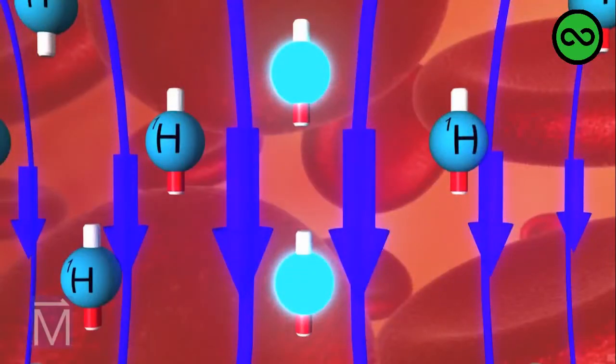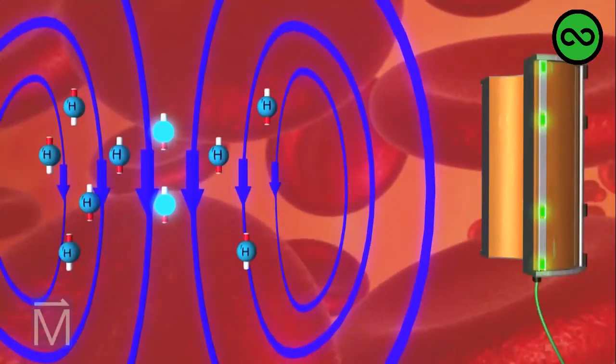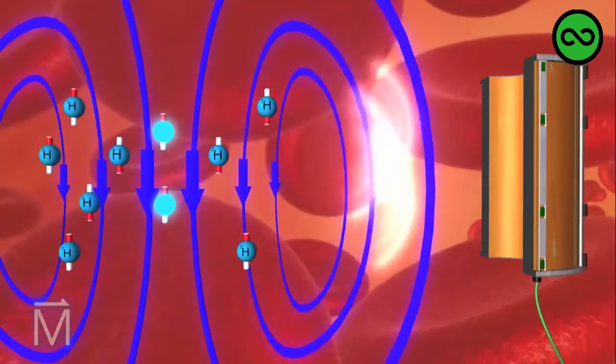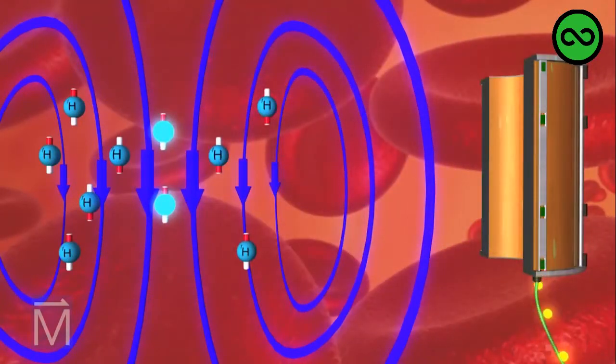When the RF pulse stops, the protons release that absorbed energy, return to their previous alignments, and in so doing, emit a signal back to the coil.